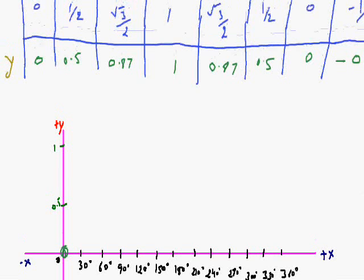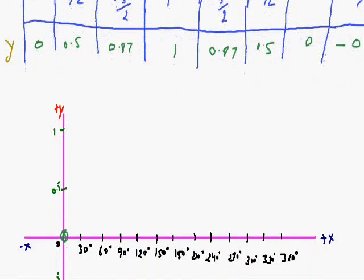Now sin 30 degree, y will be 0.5. This is our second value. If sin is 60 degree then y is 0.87, and if 90 degree then y is 1.